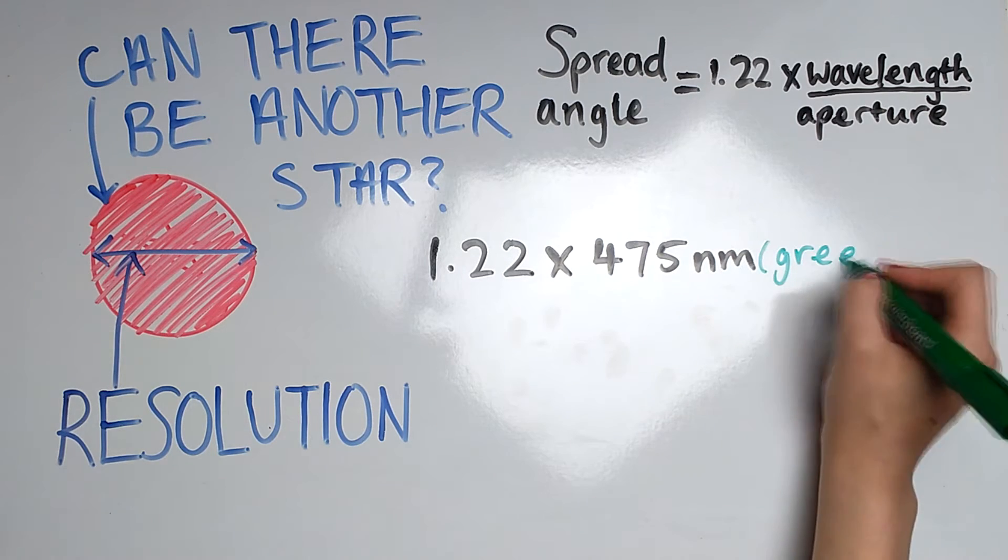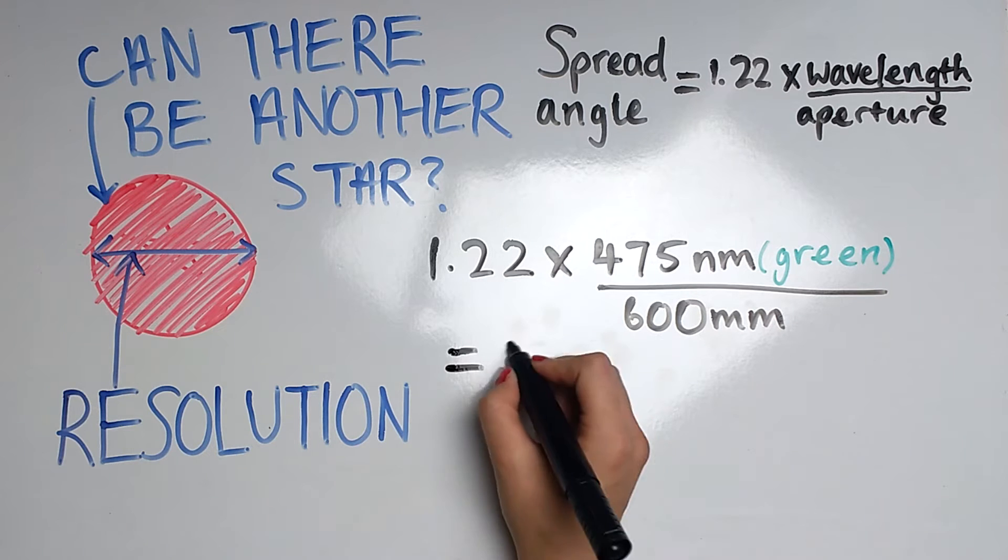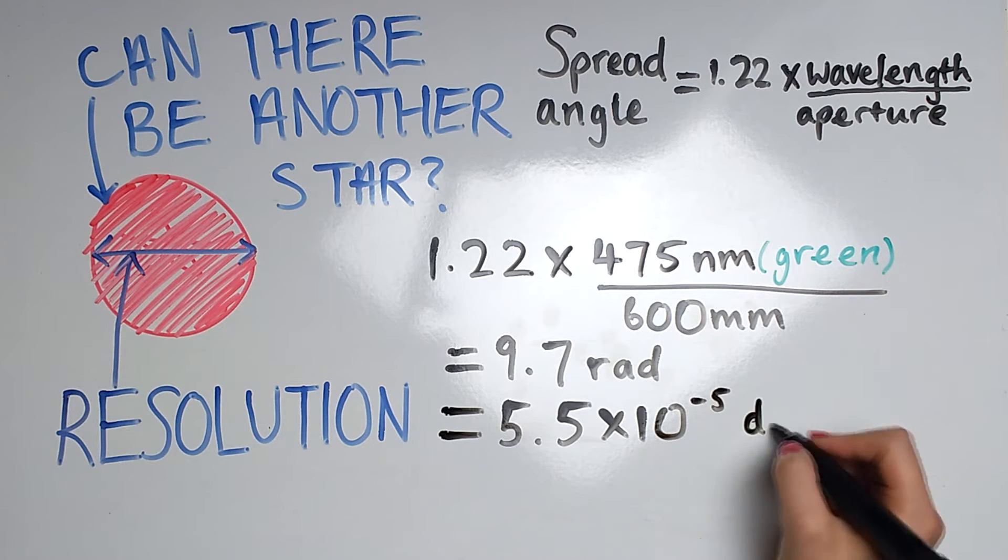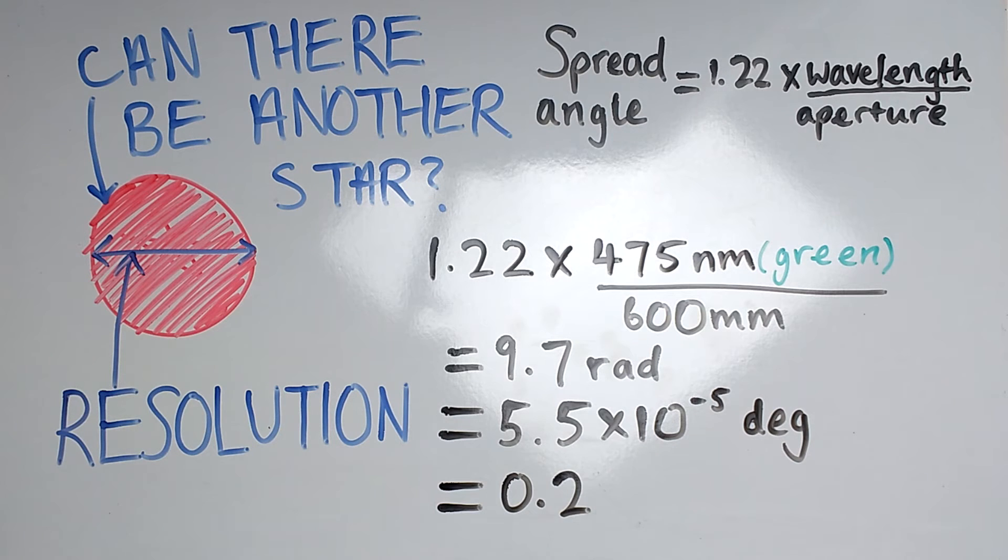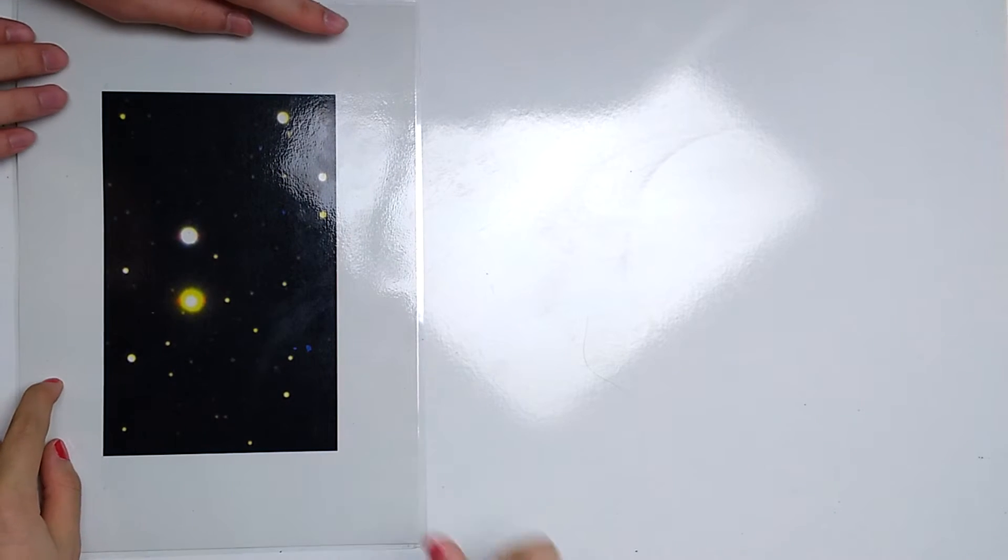The largest telescope at the University College London Observatory, Radcliffe, has a 600mm wide lens. Substituting the numbers gives us the resolution of 0.2 arcseconds. Or, at least, that's what you expect, until you actually go to the observatory and take a closer look at the images you took.